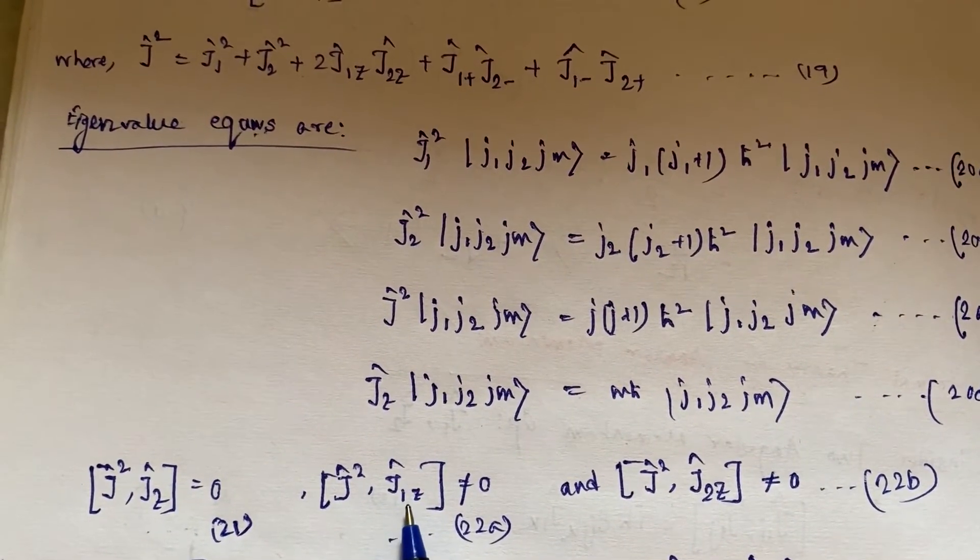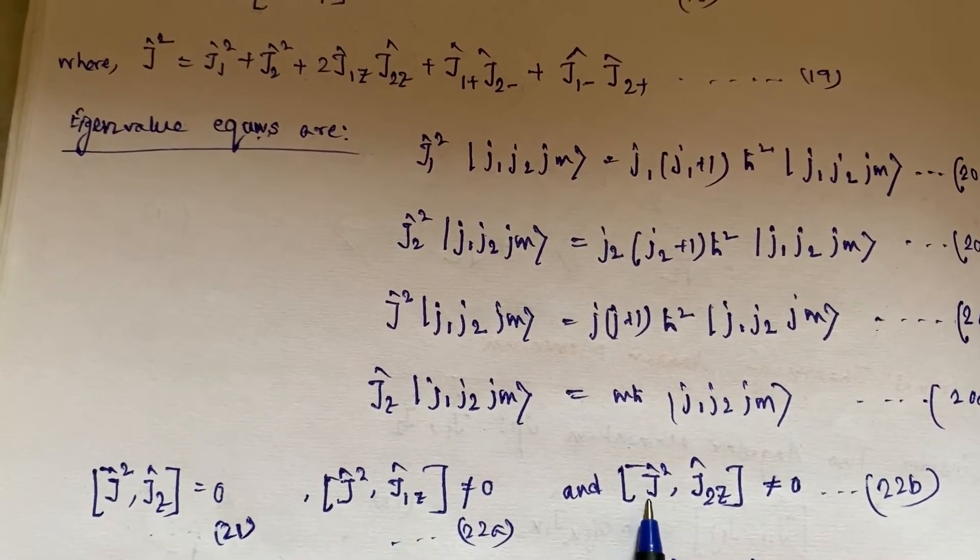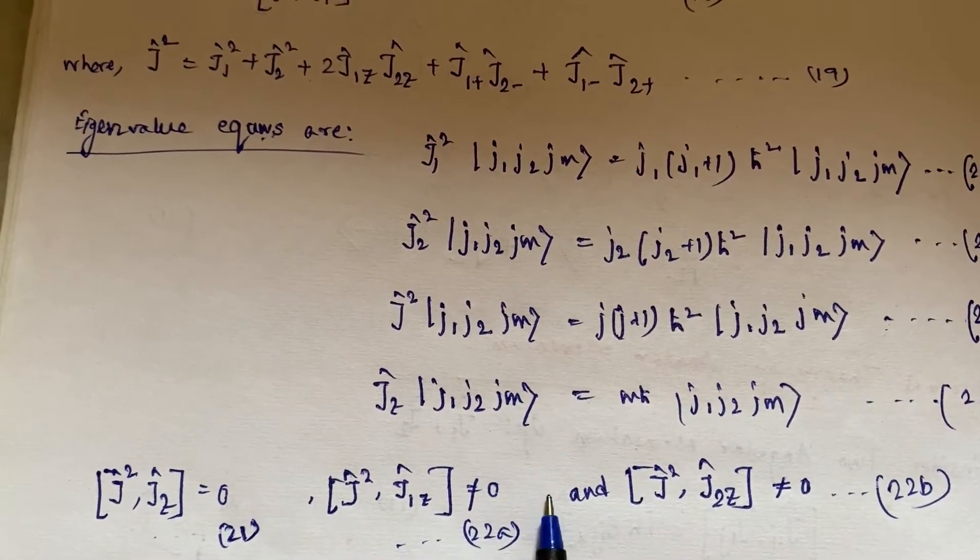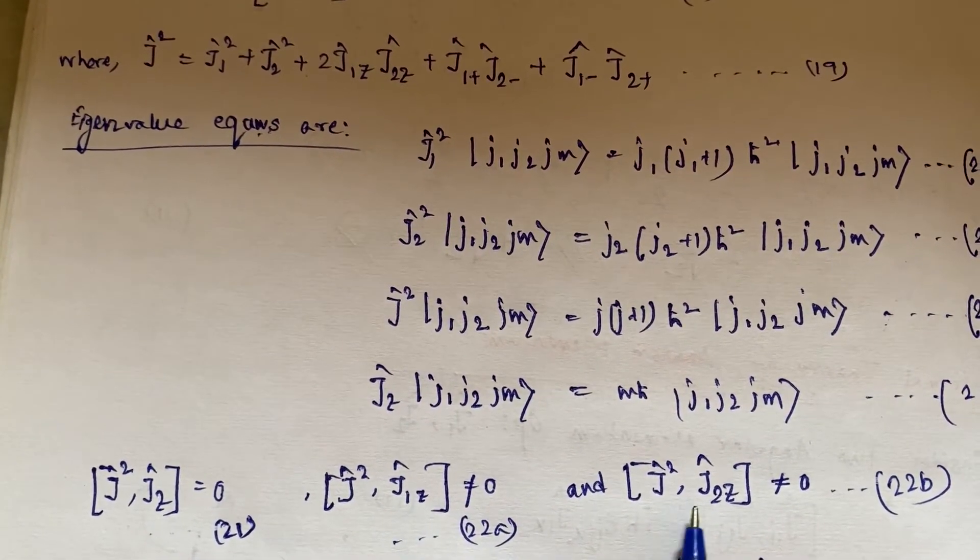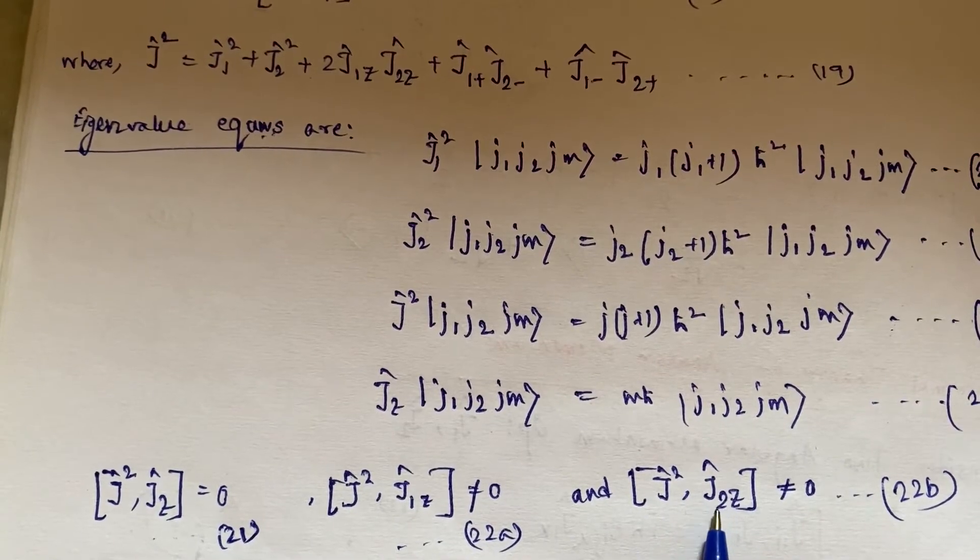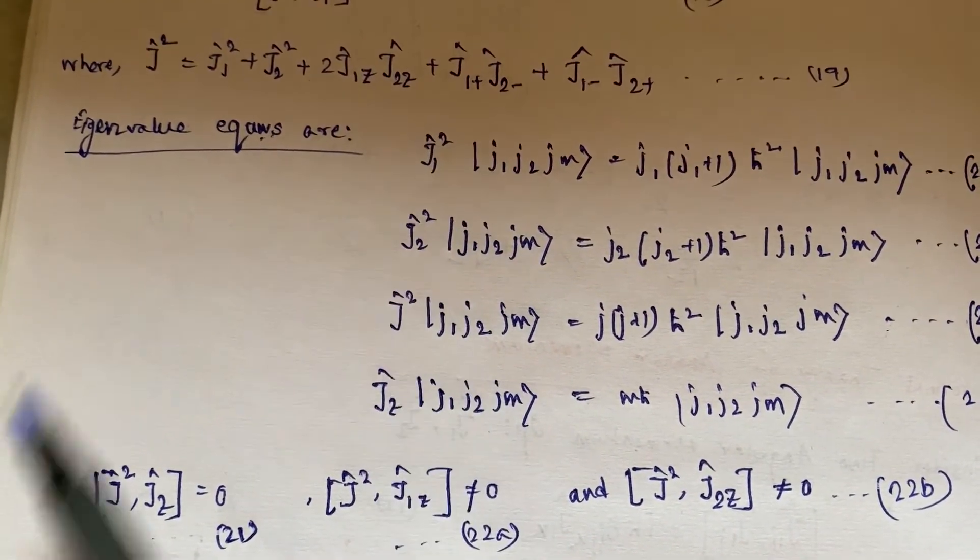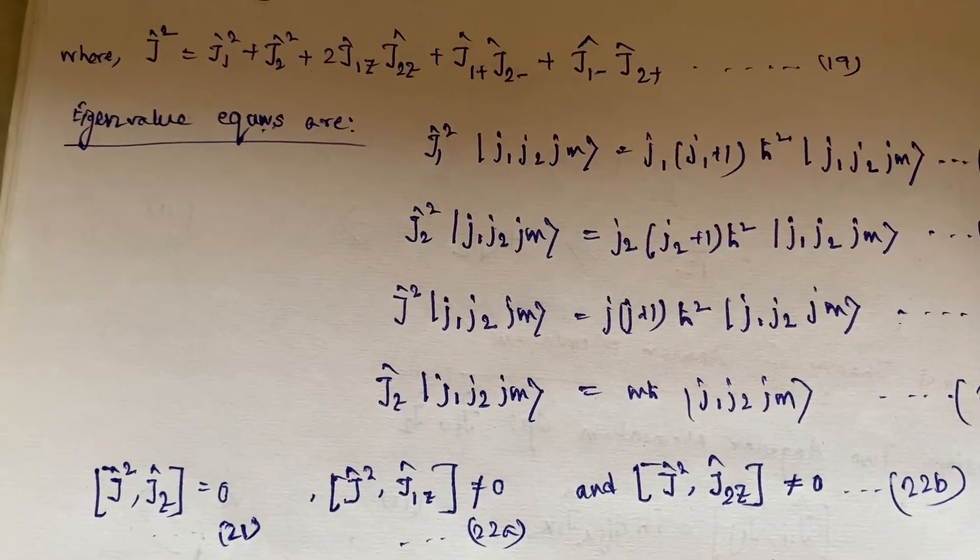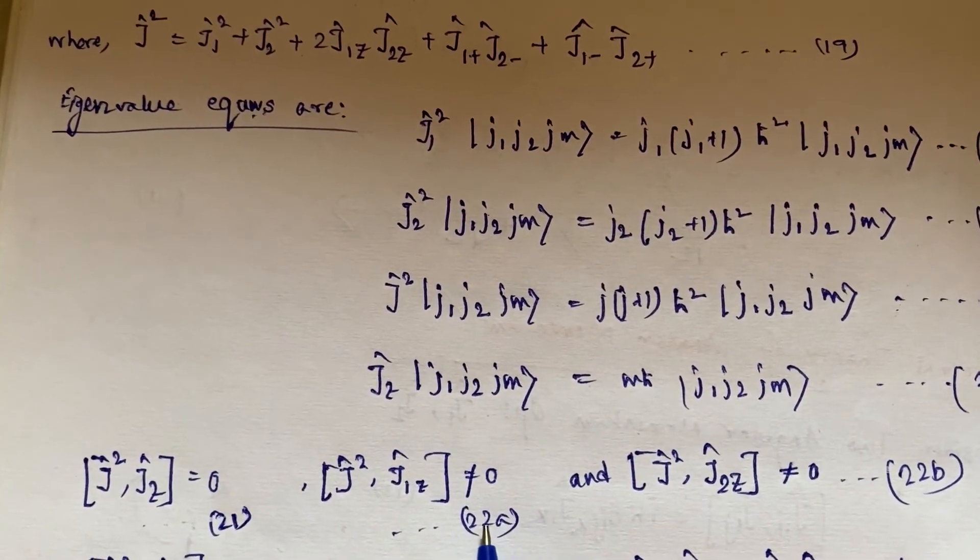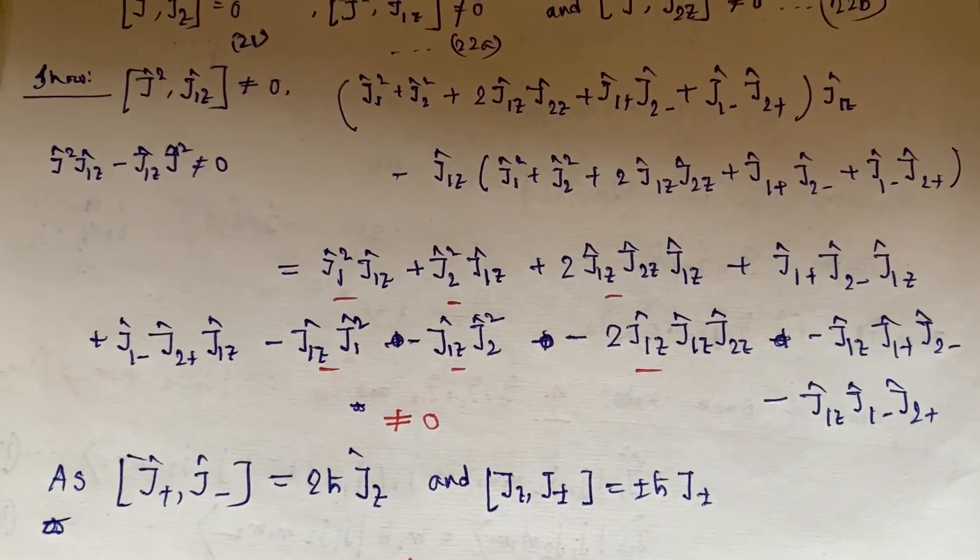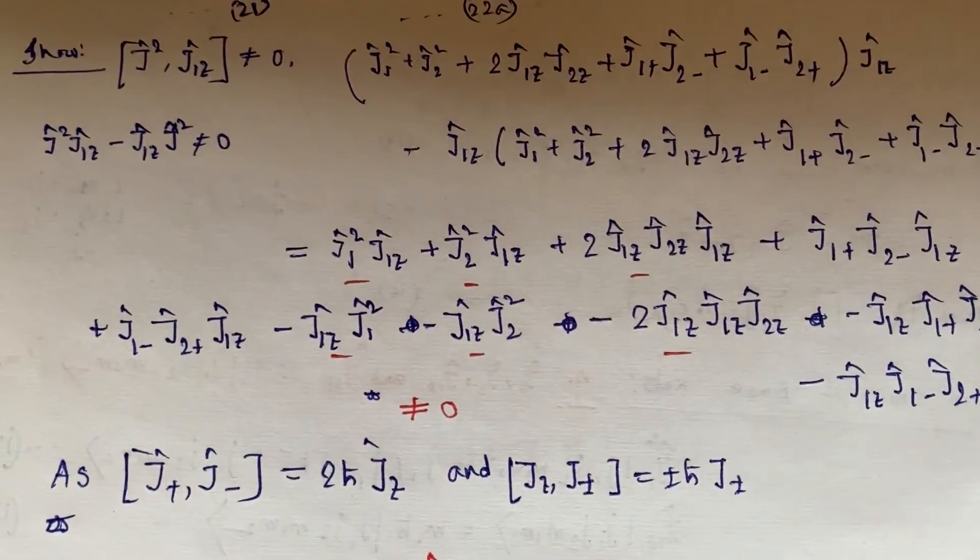Now J² also commute with J₁z and J² also commute with J₂z—I mean sorry, it does not commute with J₁z and it does not commute with J₂z because of cross terms.